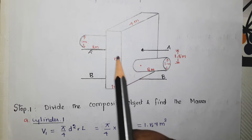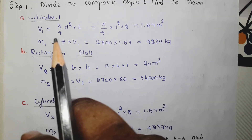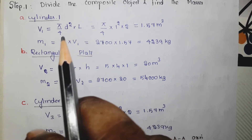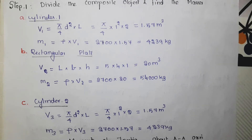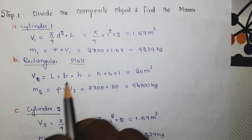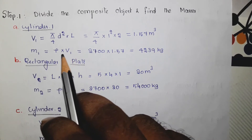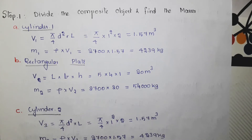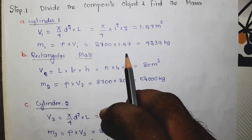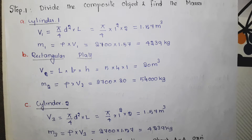We have to find the masses for individual objects. For cylinder one, mass equals volume multiplied by density. The volume of a cylinder is π d² divided by 4 into L. The diameter is 1 meter and length is 2 meters. Substituting, the volume is 1.57 meter cube. The density ρ equals 2700 kg per meter cube. Multiplying density by volume, the mass m1 equals 4239 kg.